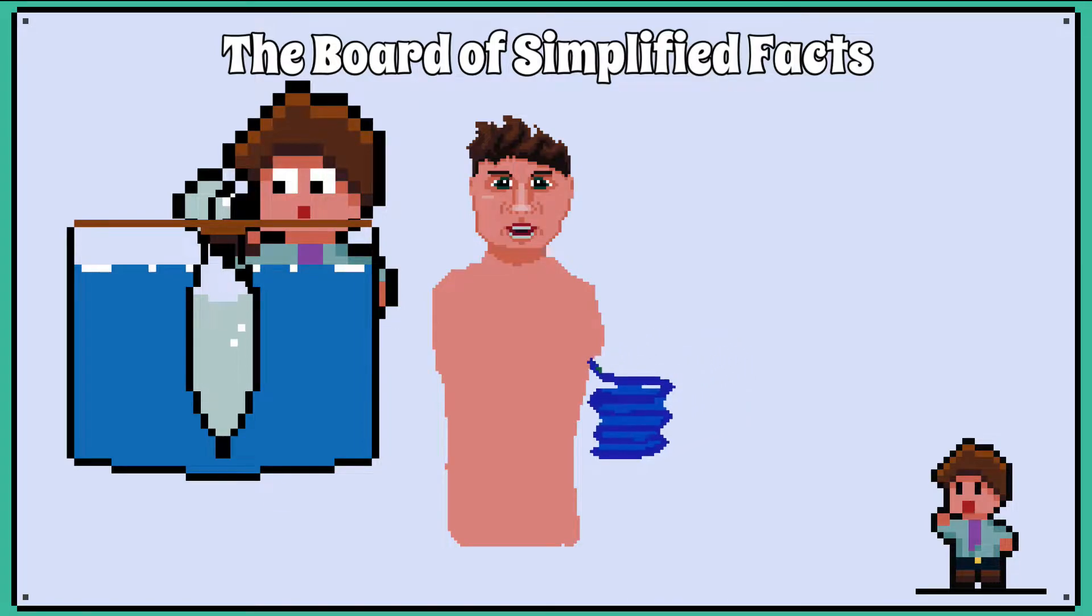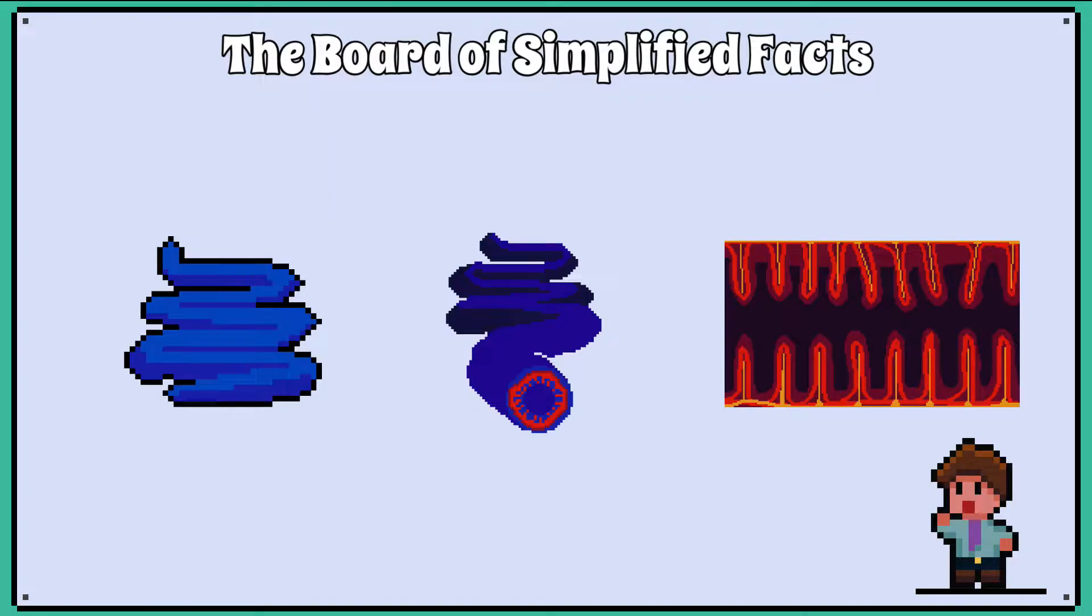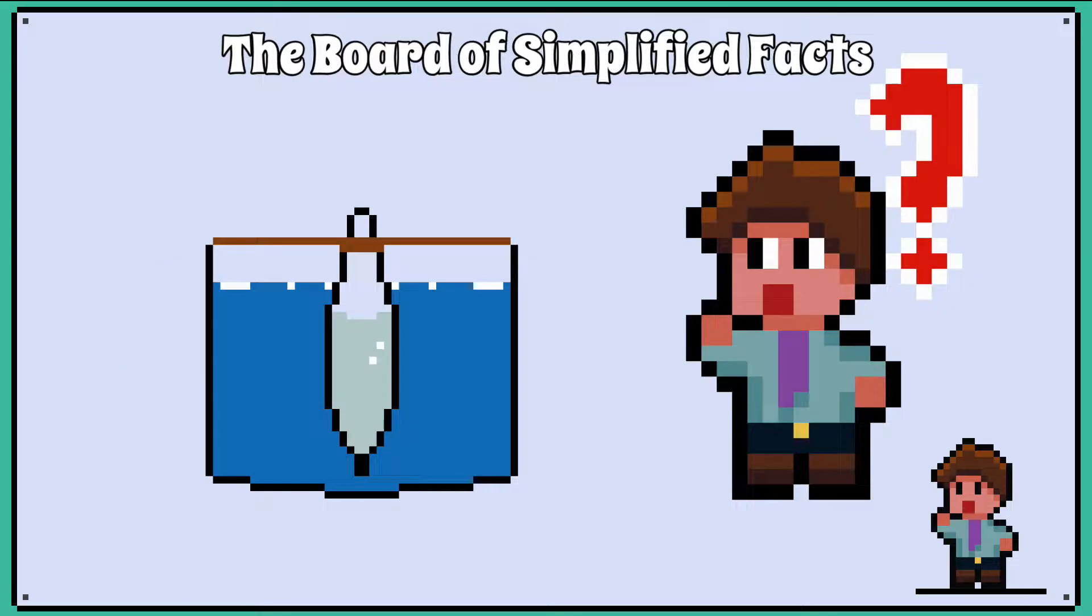Visking tubing can be used to model the small intestine regarding absorption. We will look at how the small intestine is adapted for absorption and the limitations that visking tubing has as a model of the small intestine.